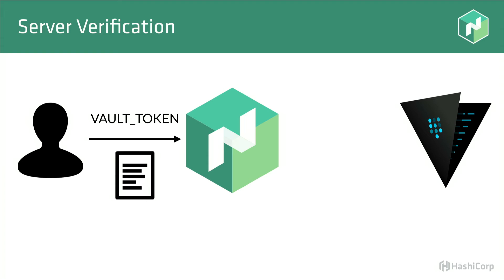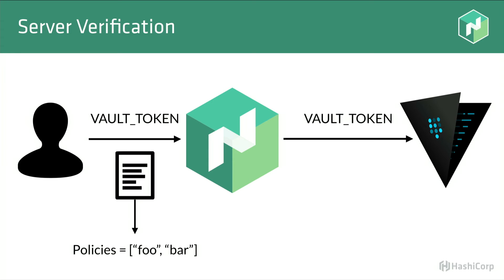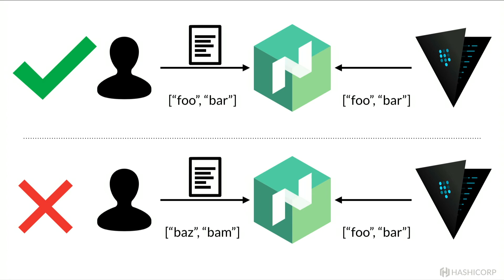Nomad verifies that you had access to the Vault policies defined in your job file. The user submits their Vault token with the job. Nomad reaches out to Vault with that token, and Vault returns the set of policies the user has access to. If the policies the job asks for are a subset of what Vault returns, we allow access. If the user asks for a policy they don't have — like policy baz when Vault says they only have foobar — we deny the job submit request and return an error to the client.